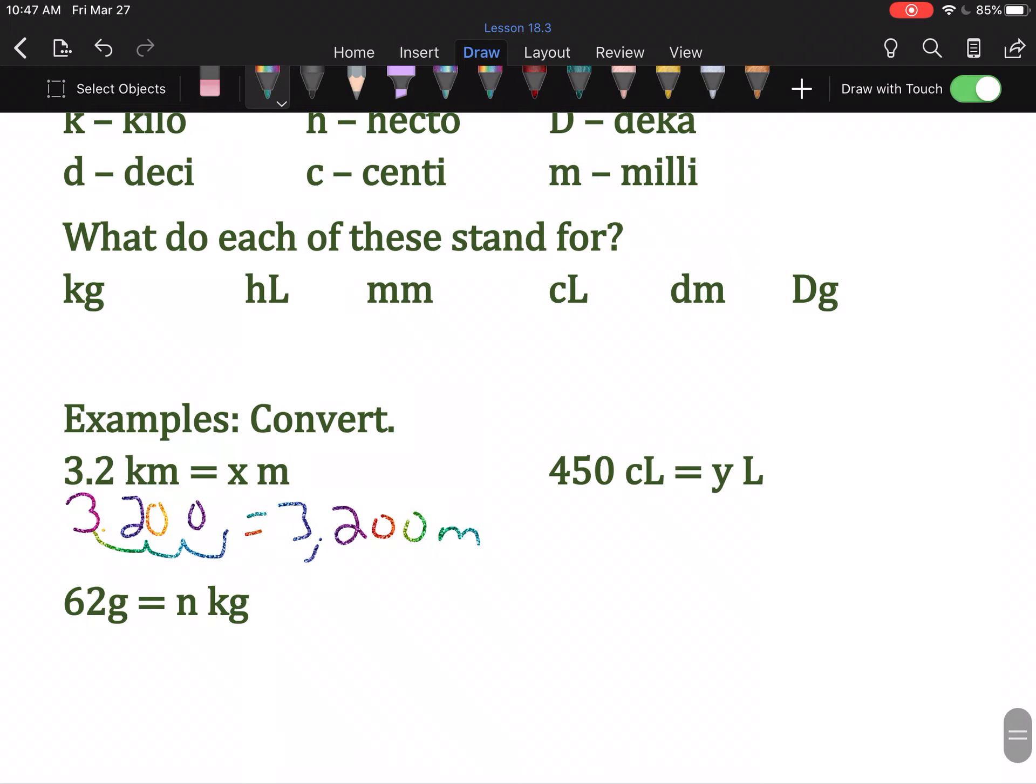Where's the decimal point on 450? I hope you all said on the end. As in, there. So, we said two left. So, one, two left. That means it's 4.5 liters. All we're doing is moving a decimal point, left, right, whatever.